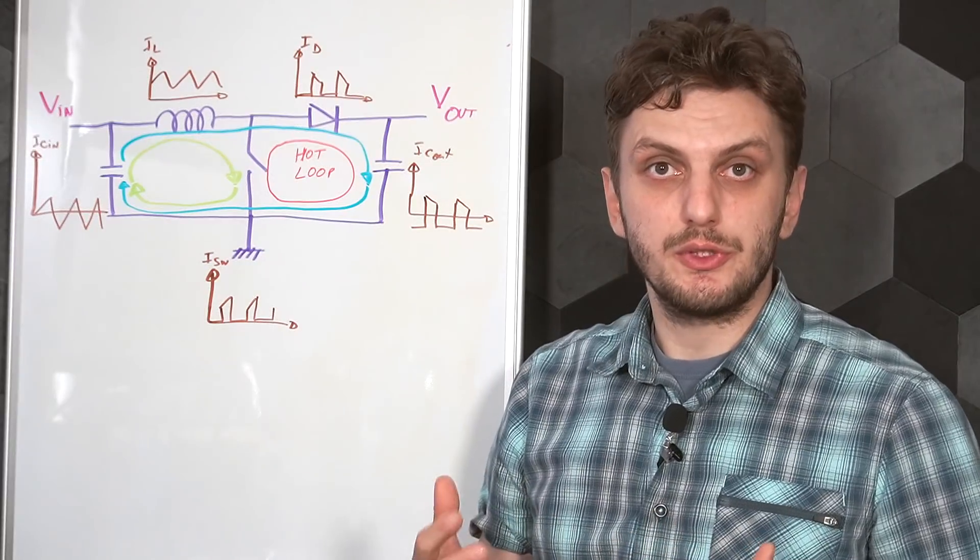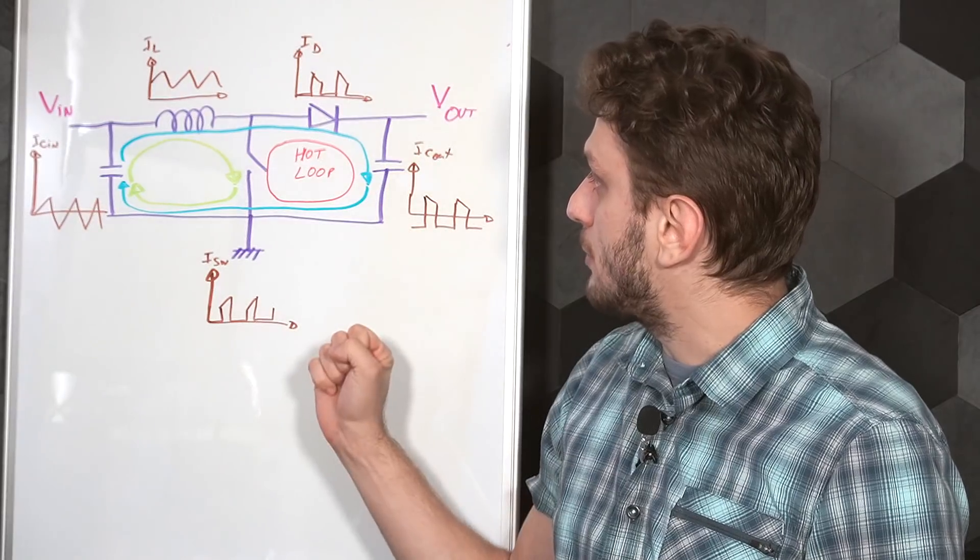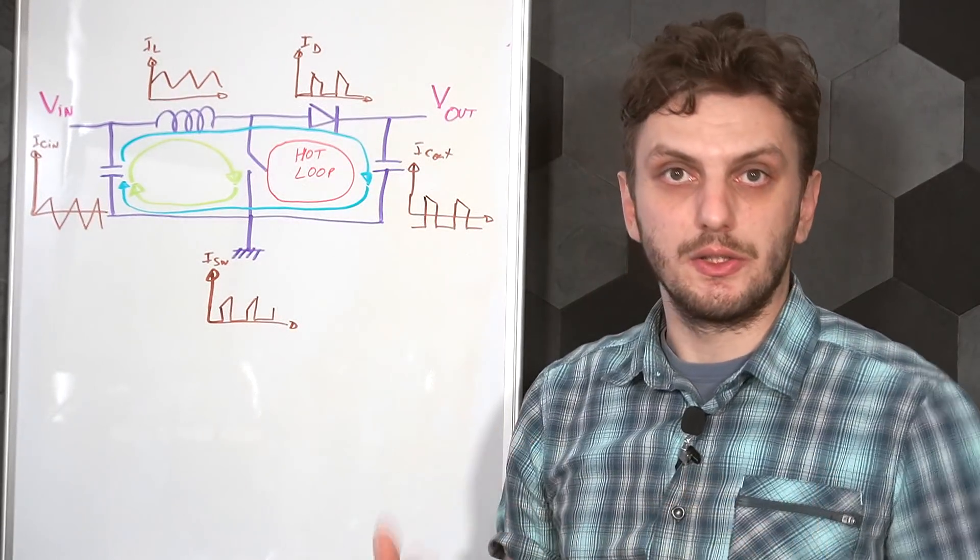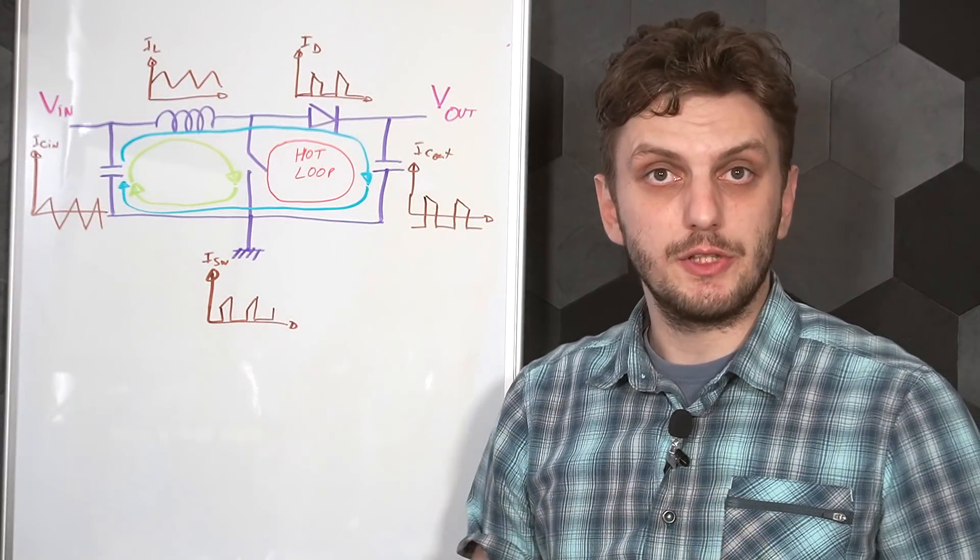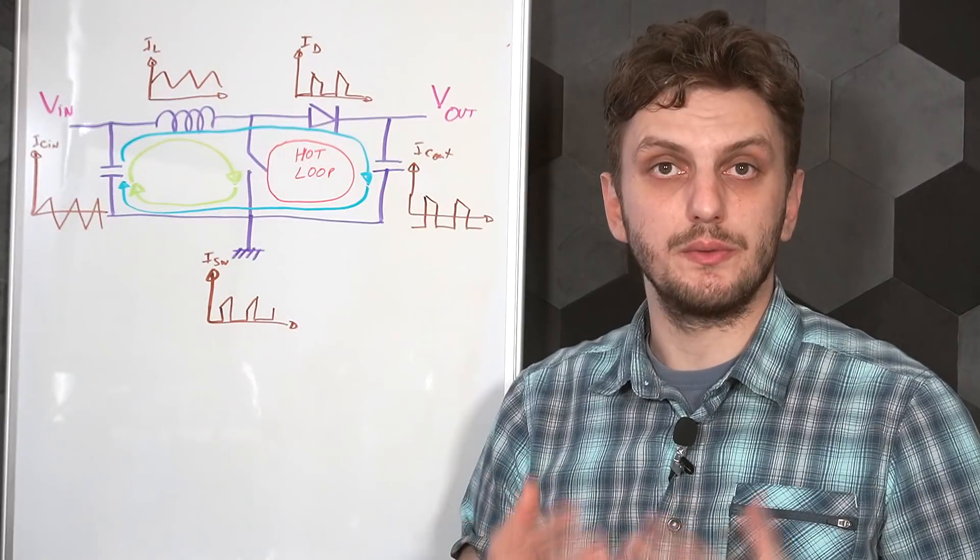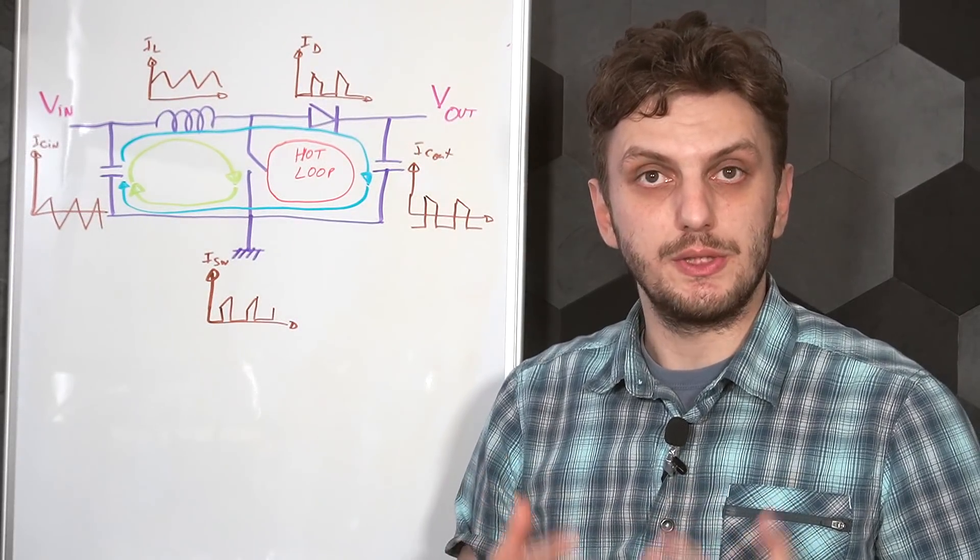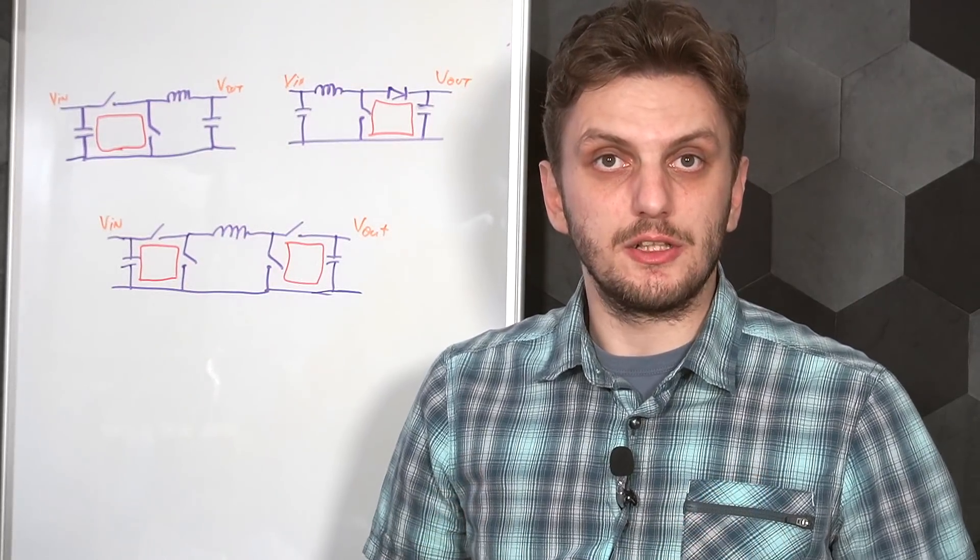So the hot loop can be defined as the loop around which all of the components have discontinuous current. So in the case of the boost converter, these components are the diode, the switch, and the output capacitor. Since all three of these components have discontinuous current variation. Now we can identify this sort of loop in any converter topology and the components around this loop should be the ones that are responsible for creating the most amount of high frequency magnetic noise.